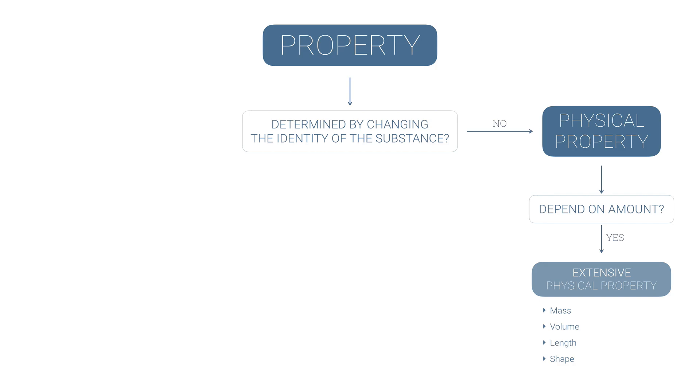Mass, which is related to weight, the volume, the amount of space that something takes up, its length or its shape, those are all examples of extensive physical properties. But a property that does not depend on the amount of a substance is an intensive physical property.